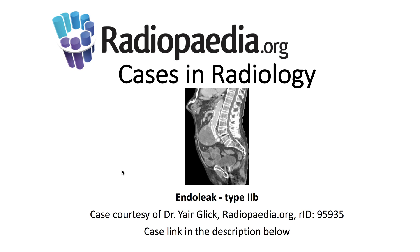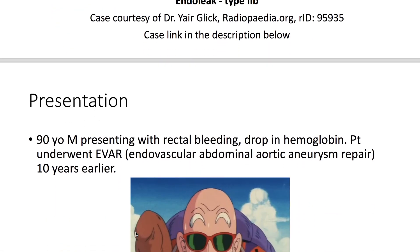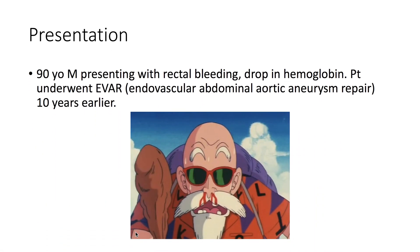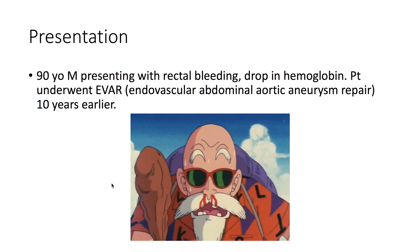Presenting today's Radiopedia.org case: a radiology endoleak Type 2b case, with the case link in the description below. A 90-year-old male presenting with rectal bleeding and a drop in hemoglobin.